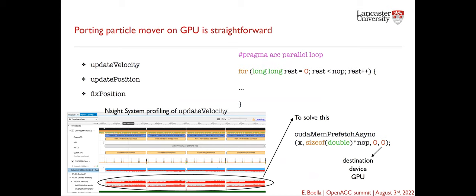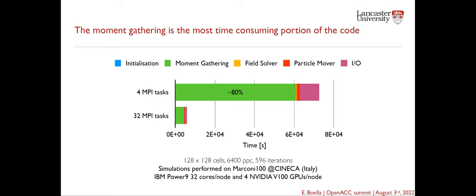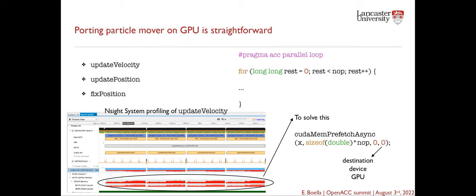Since the moment gathering is the most time-consuming part, we wanted to port it to GPU. However, we started from the particle mover because it was simpler — we had no prior experience with GPU. Porting the particle mover to GPU is straightforward: it is composed of three main routines — update velocity, update position, and fix position. All three are basically a long for-loop over all particles followed by independent operations, so it is sufficient to add the pragma ACC parallel loop directive on top of the for-loop.